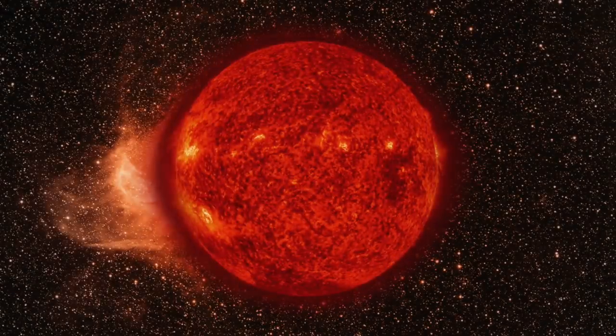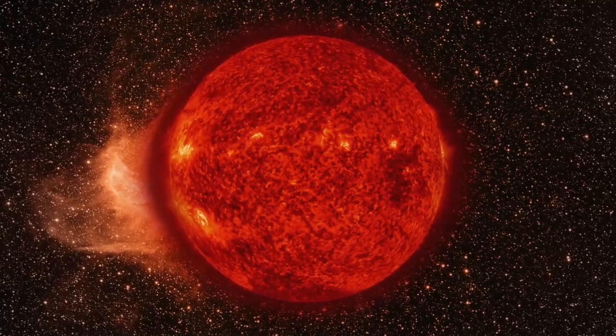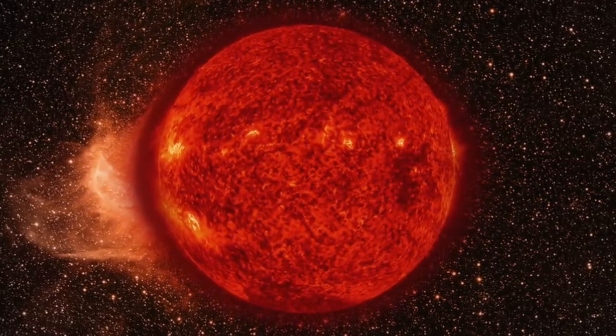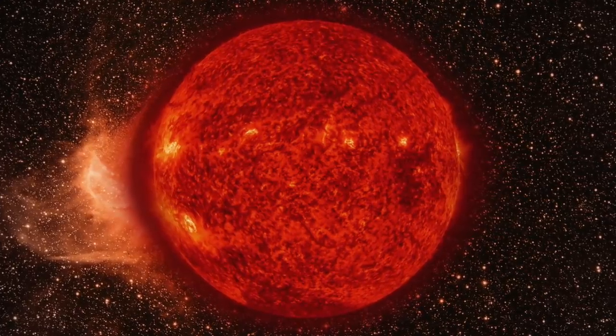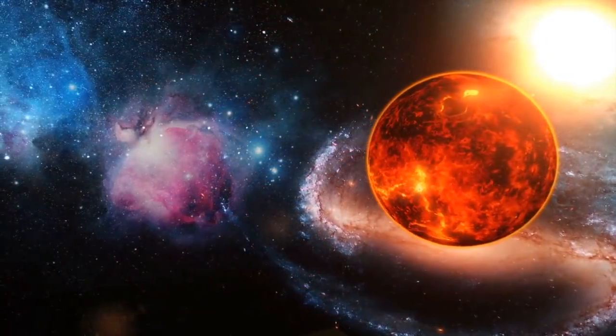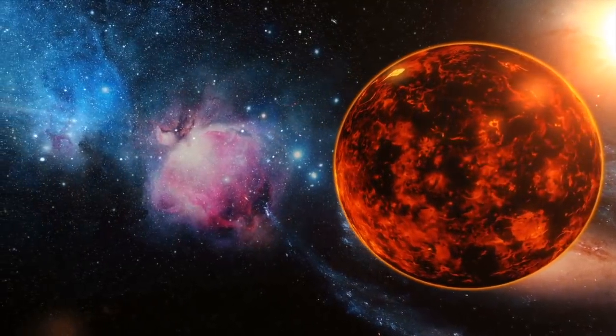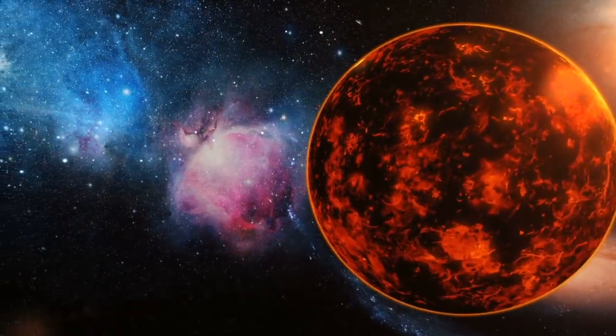The planet is expected to be tidally locked, which means that there rests a permanent day side and a permanent night side, as there's no rotation to create a day and night cycle. This leaves the day side of the planet to be more than 1700 degrees celsius in temperature, a temperature more than hot enough to turn iron into a liquid.